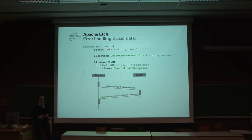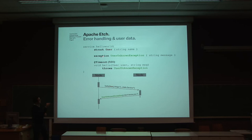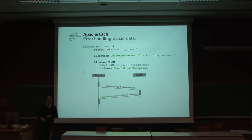Another feature Edge has is data modeling and error handling. Data modeling is inspired by object-oriented languages, so you can define structs and use object-oriented features like inheritance. For example, you can have a struct called User with a name property, and pass that user as a parameter to your Hello method. You can also define exceptions just like normal data — for example, a UserUnknownException with an exception message string. You annotate your function with a throws declaration, just as you know from Java. On the wire, if you say hello to the server and it doesn't know you, it throws a UserUnknownException.